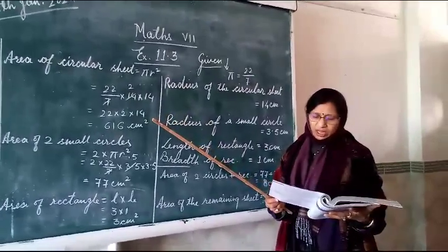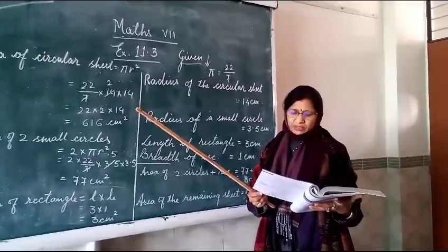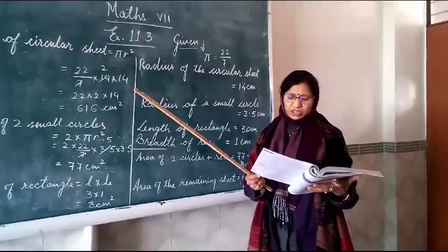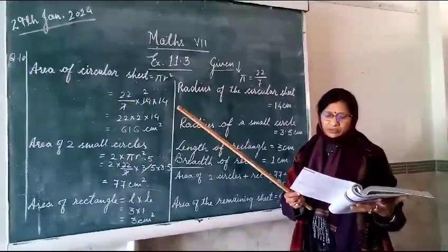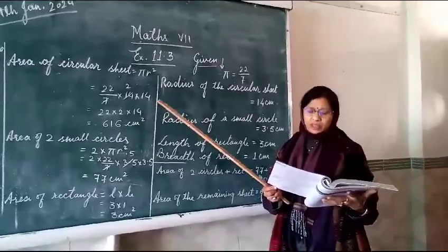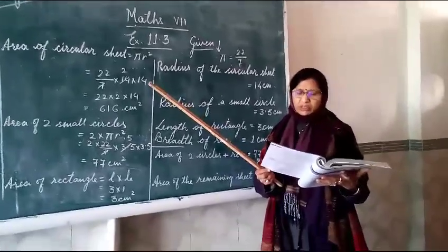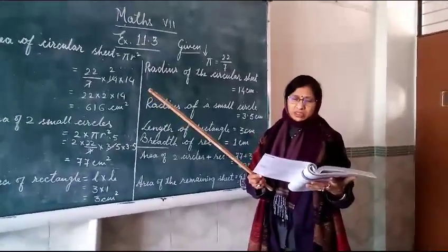Now we are going to start 10th question and 10th question is like this: from a circular card sheet of radius 14 cm, 2 circles of radius 3.5 cm and a rectangle of 3 cm and breadth 1 cm are removed and this figure is given in the book itself. So you see the figure and then it is asked find the area of the remaining sheet and pi's value is given.